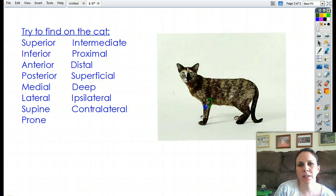Proximal. His elbow is proximal to his foot. So closer to the body. That means his foot is distal to his elbow, farther away from.